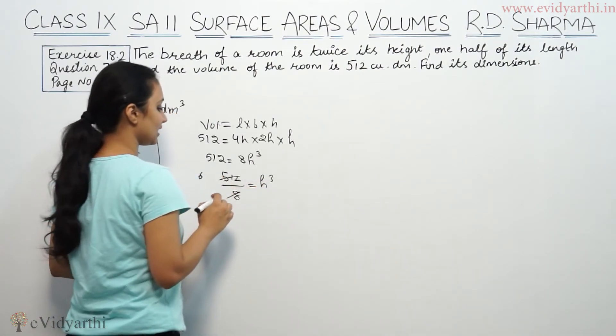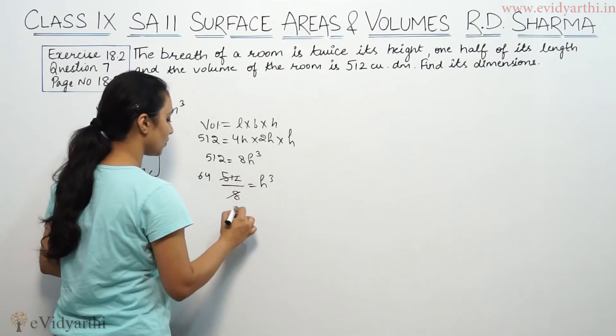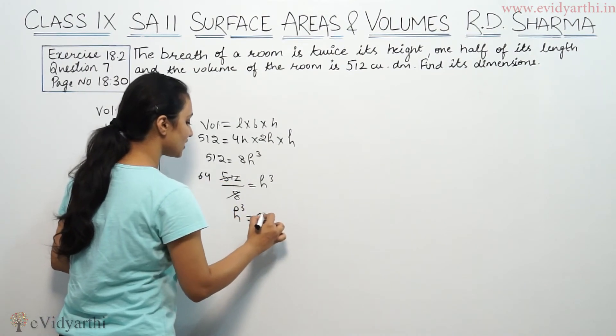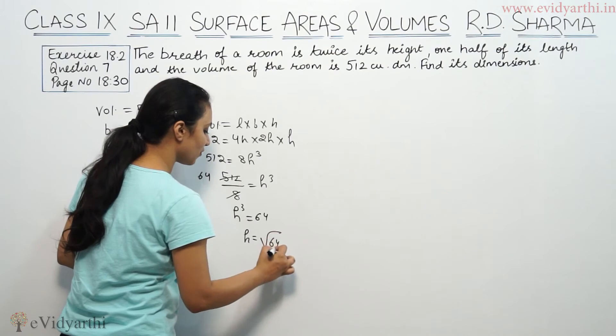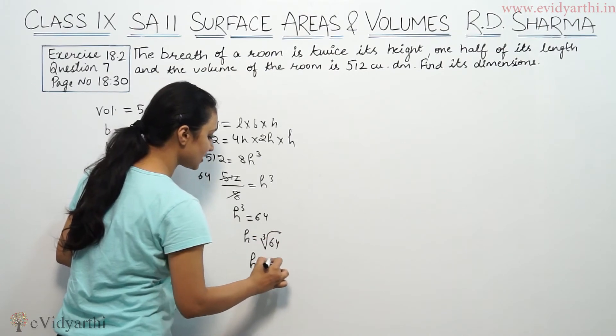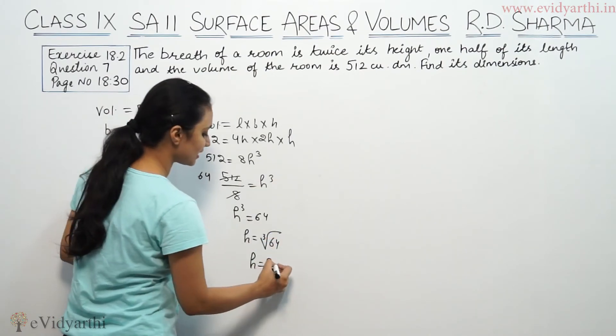8 into 64 is 512, so 4 into 32. So h cube is equal to 64. So h is cube root of 64, so h is 4 decimeters.